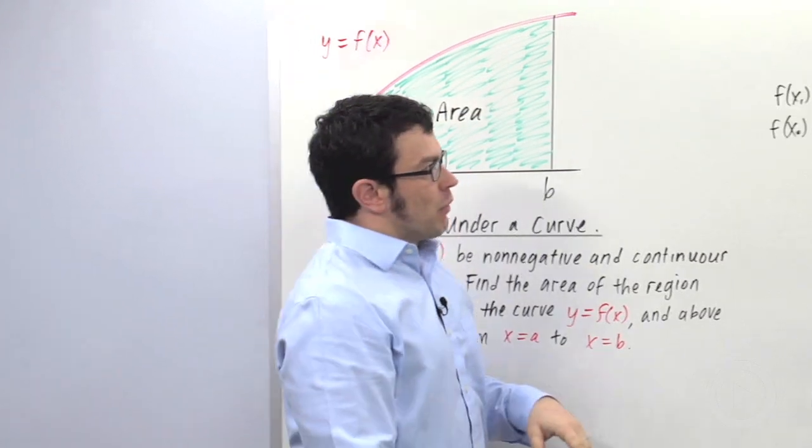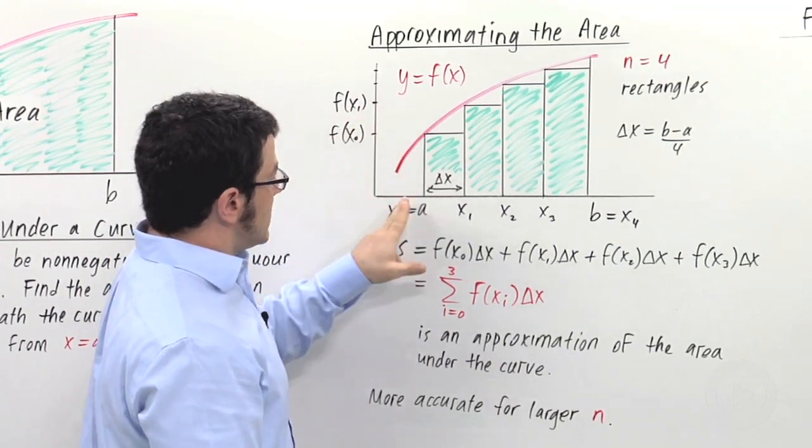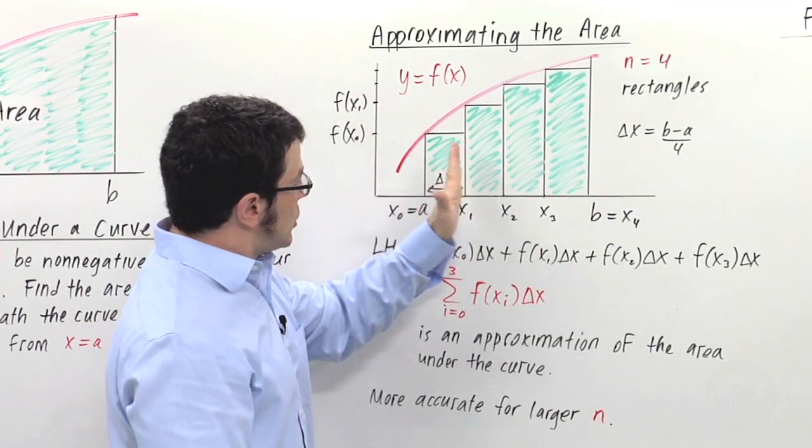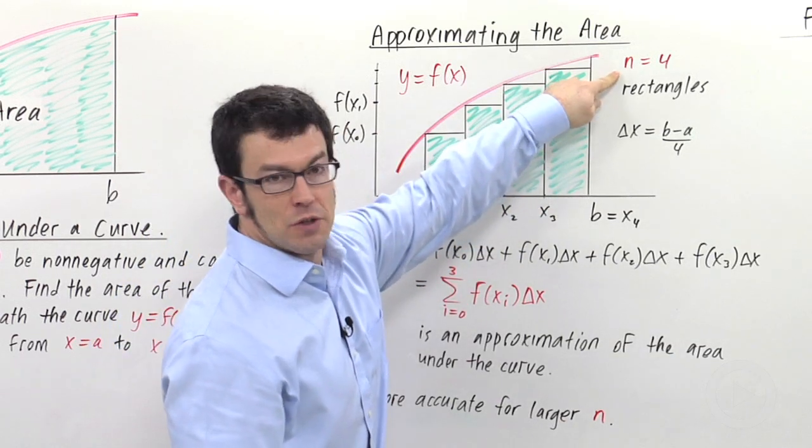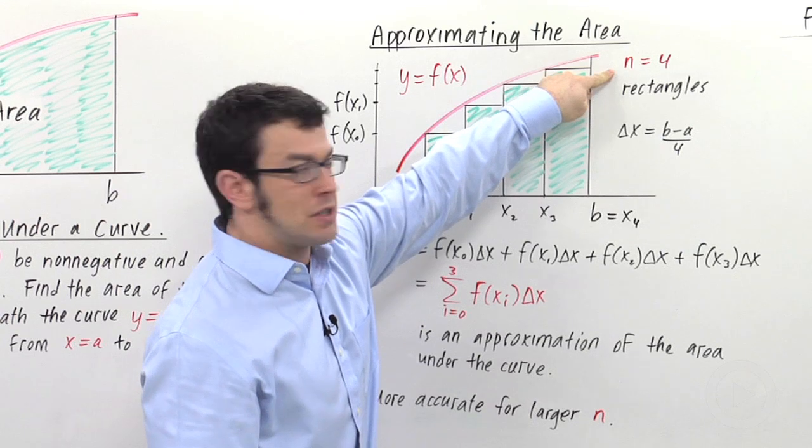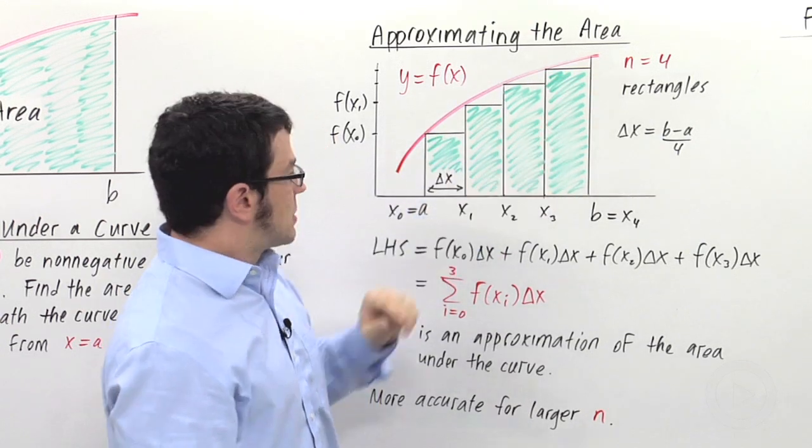Now, before we were talking about approximating the area with rectangular sums. The idea is to take the interval from a to b and chop it up into a certain number of subintervals. In this case, we have 4. n equals 4. n is the number of subintervals. And we use four rectangles to approximate the area under this curve.